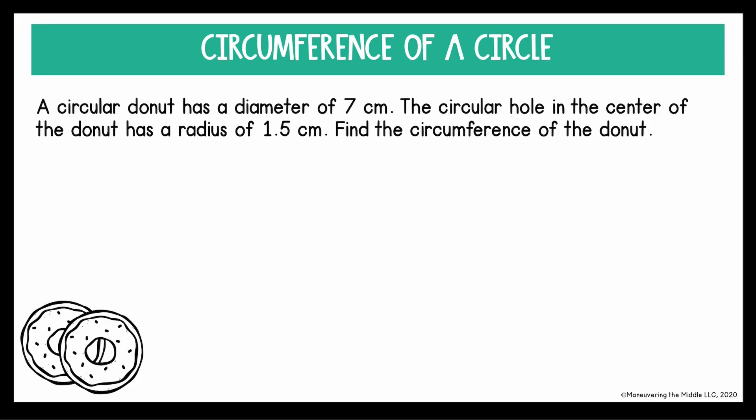This question says, a circular doughnut has a diameter of 7 centimeters. The circular hole in the center of the doughnut has a radius of 1.5 centimeters. Find the circumference of the doughnut. So they want the circumference of the doughnut, and we need to know if this information about the hole in the center of the doughnut matters. And it doesn't. The size of this hole is not going to affect the circumference of the entire doughnut. So know that this sentence is just extra information.